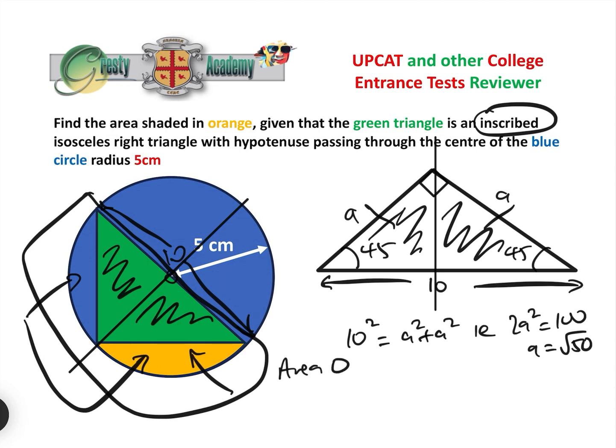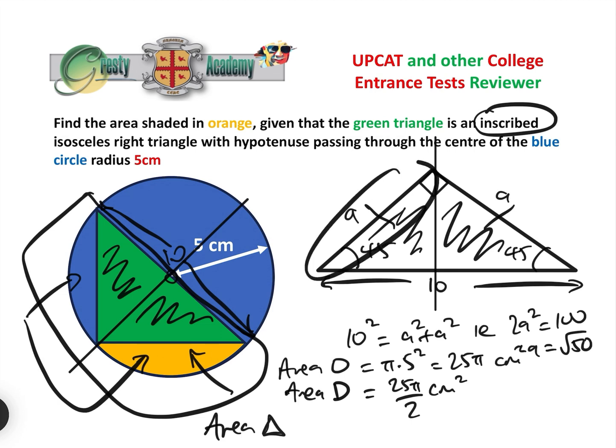The area of the circle is easy, pi times 5 squared, which is 25 pi centimeters squared. So the area of the semicircle is half that, that's 25 pi over 2 centimeters squared. The area of the triangle, the isosceles right triangle, is base times perpendicular height divided by 2, which is a squared over 2, which is 50 over 2, which is 25 centimeters squared.